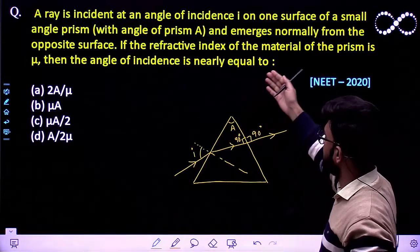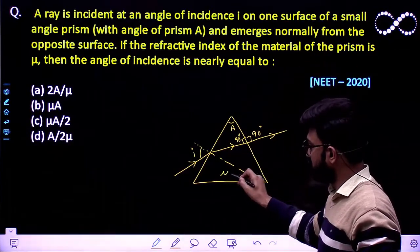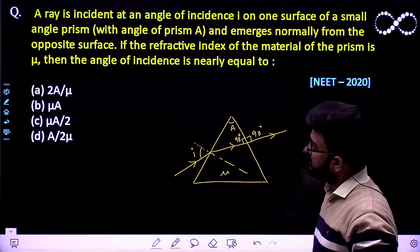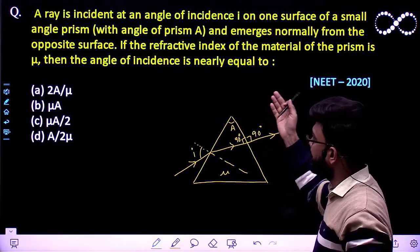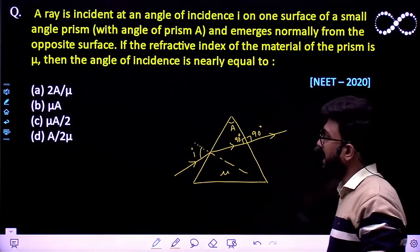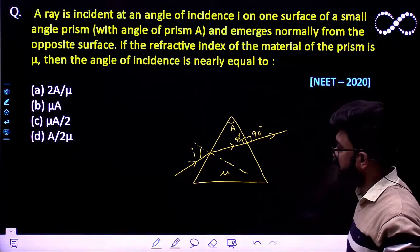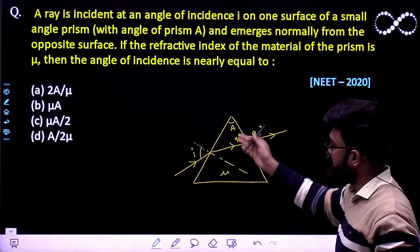If the refractive index of the material of the prism is mu, then the angle of incidence is nearly equal to what? You need to find out the angle of incidence I in terms of A and mu.